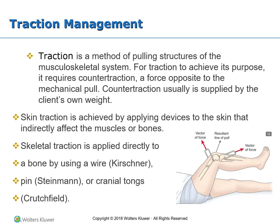The two most common types are skin traction and skeletal traction. Skin traction is achieved by applying devices to the skin that directly affect the muscles or bones; an example is Buck's traction. Skeletal traction is applied directly to a bone by using a wire, pin, or cranial tongs. General or local anesthesia may be used when inserting these devices. The pull is achieved by connecting the attachment from the client to a system of ropes, pulleys, and weights on an orthopedic bed frame. A Thomas splint with a Pearson attachment is often used to suspend a leg in traction.